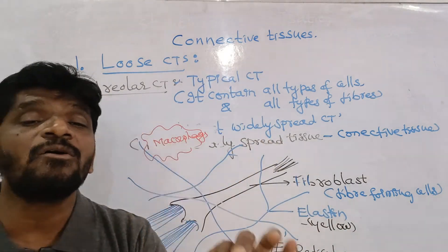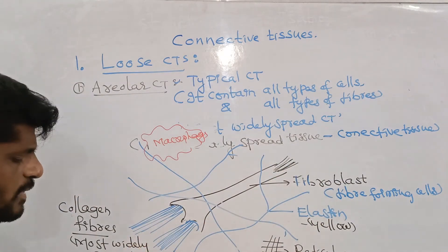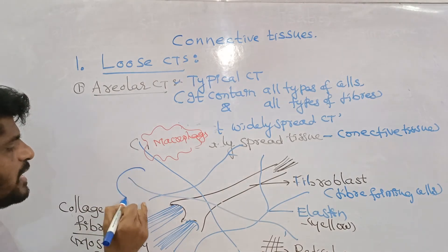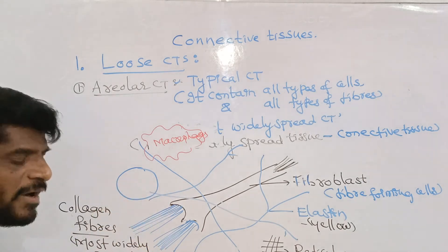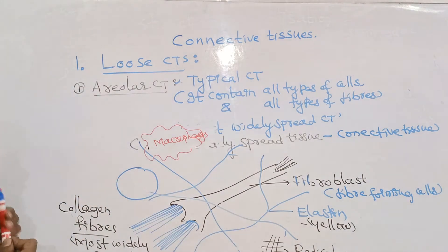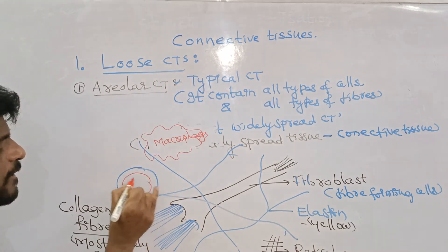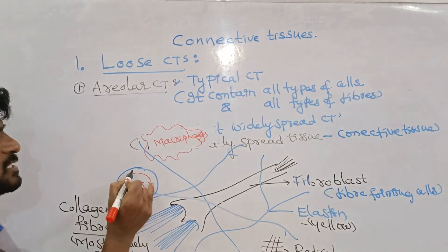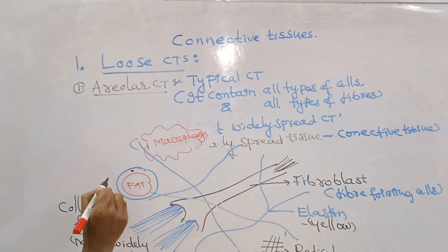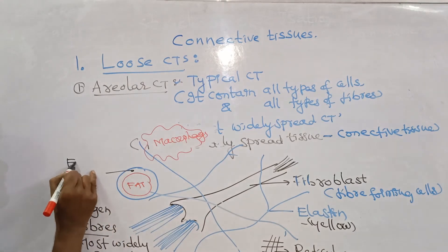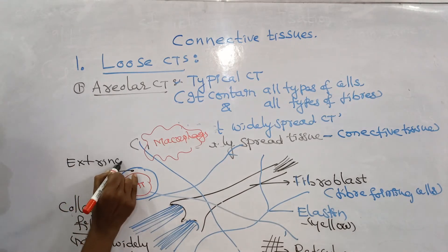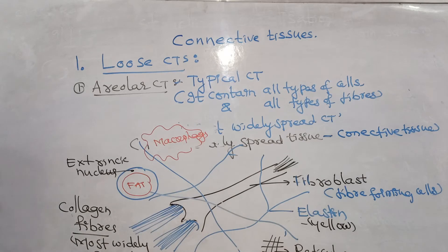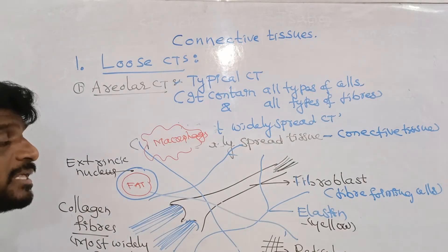The areolar tissue also contains cells called adipocytes. Adipocytes are modified cells specialized for fat storage. The fat storing area is large, and the cytoplasm with the nucleus is pushed to the side — this is the eccentric nucleus in the adipocytes.